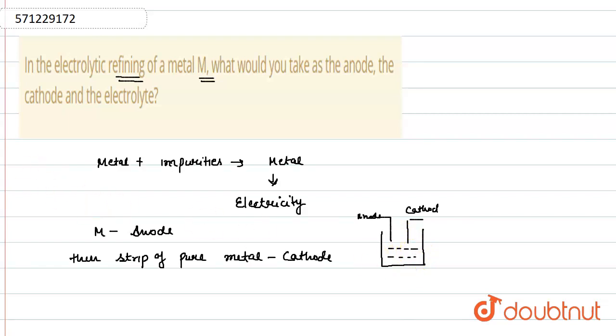we have the anode on one side and the cathode on the other side. In this beaker, a water-soluble salt of the metal is taken.